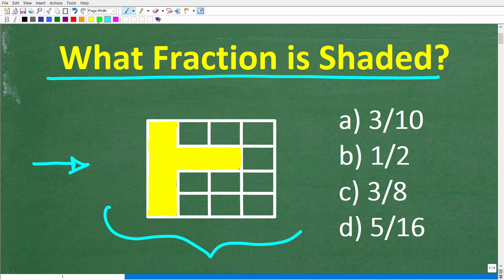Now we do have a multiple choice question, and let's take a look at our answers. A is 3 over 10 or 3 tenths, B is 1 half, C is 3 eighths, and D is 5 over 16 or 5 sixteenths.